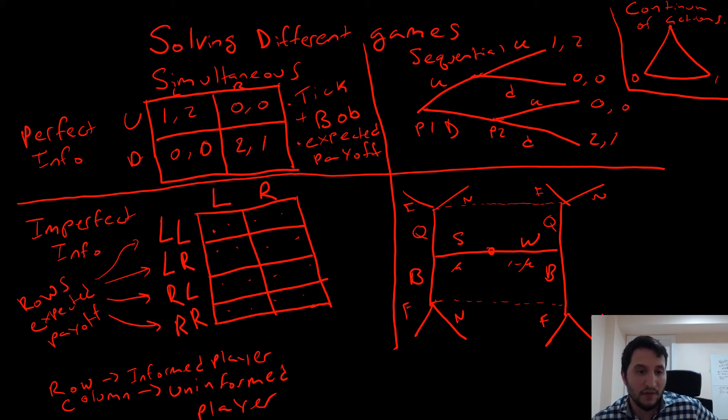For our simultaneous move games, we consider L. If L is being played, what is our row player's best response? It's going to be up. And if R is being played, the best response is going to be down. Likewise for our column player, if up is being played the best response will be left, and if down is being played the best response is right.